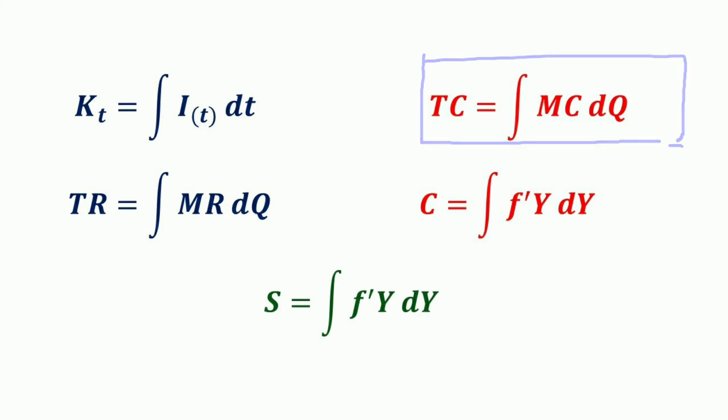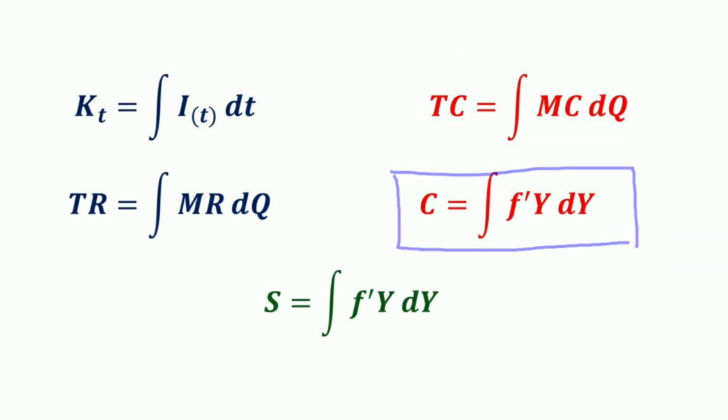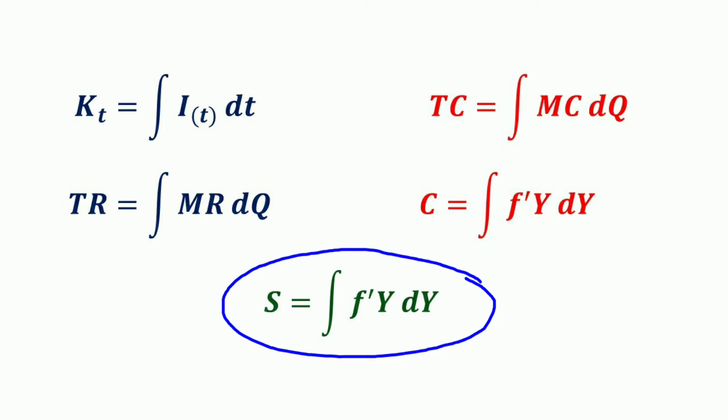So the total cost function can be derived by finding the indefinite integral of the marginal cost function. Fourthly, we have the consumption function. If the marginal propensity to consume (MPC), which is a function of income, is given, then the consumption function can be obtained by taking the indefinite integral of the MPC, or F′(Y). Similarly, we have the saving function — if the marginal propensity to save, which is a function of income, is given, then the saving function can be obtained by finding the indefinite integral of the marginal propensity to save, or F′(Y).